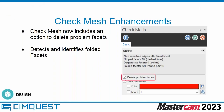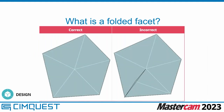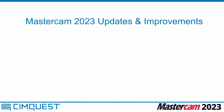A little bit into check mesh enhancements: check mesh is a tool to check mesh entities as they come in. Check mesh now includes an option to delete problem facets — it automatically finds and deletes them. It also detects and identifies folded facets, which occur when a neighboring node is pulled over an existing facet, creating a crease in your surface. With the identify switch turned on, Mastercam actually places a visible icon on your model showing you where the problem is so you can use the mesh tools to simply remove it.